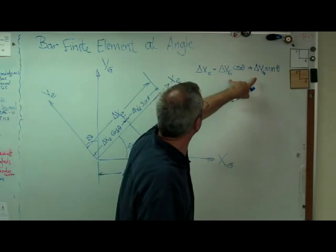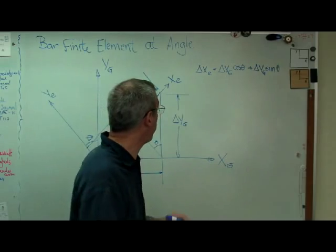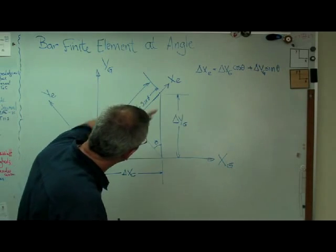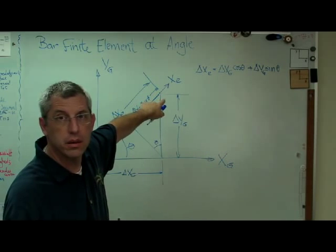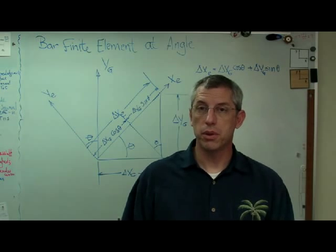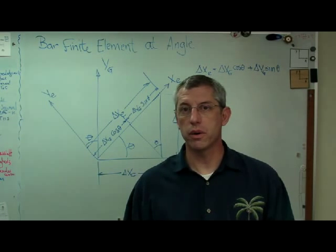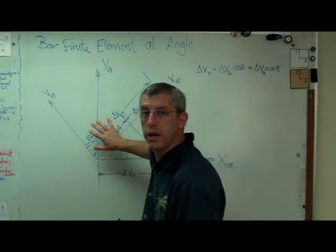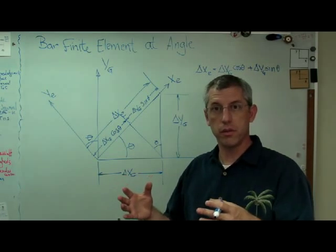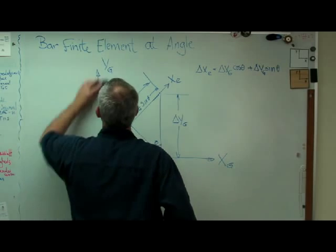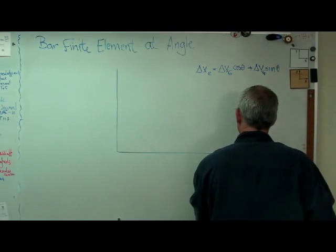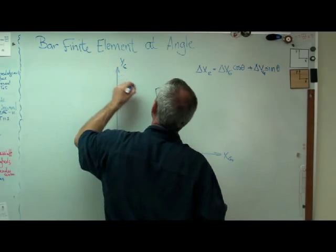I've got two unknowns and one equation, so I'm going to need one more equation. I want to write one more of these and then I'll have the whole transformation I'm looking for. I did this using deformations in the x direction in the element coordinate system. Now I'm going to look at displacements in the y direction. I know that this particular bar element doesn't have any displacements in the y element coordinate system, but this derivation is more general than that — I'm trying to make this accurate for any element. I only ever have to do this once.